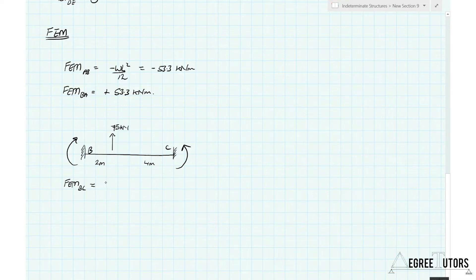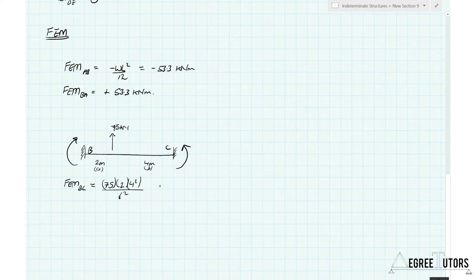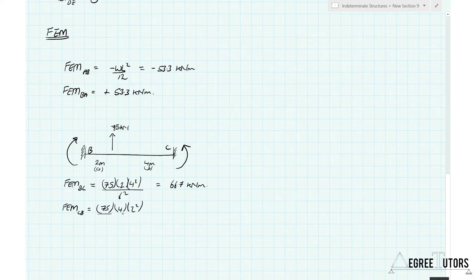Using the formula for an off-centre point load: the fixed end moment for BC is P times A times B² over L², where A is 2 and B is 4 and L is 6. That gives 66.7 kNm. The fixed end moment for CB is 75 times B times A² over L², which is 75 times 4 times 2² over 6², giving minus 33.3 kNm.